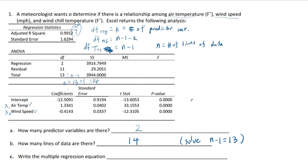Write the multiple regression equation. You have to know the general form of a regression equation. It looks like b0 plus b1·x1 plus b2·x2. And then if you had more than x2, let's say there is a third factor x3, then it will be plus b3·x3 and then plus b4·x4 and so on. But we just have two predictor variables, so this is where you end.